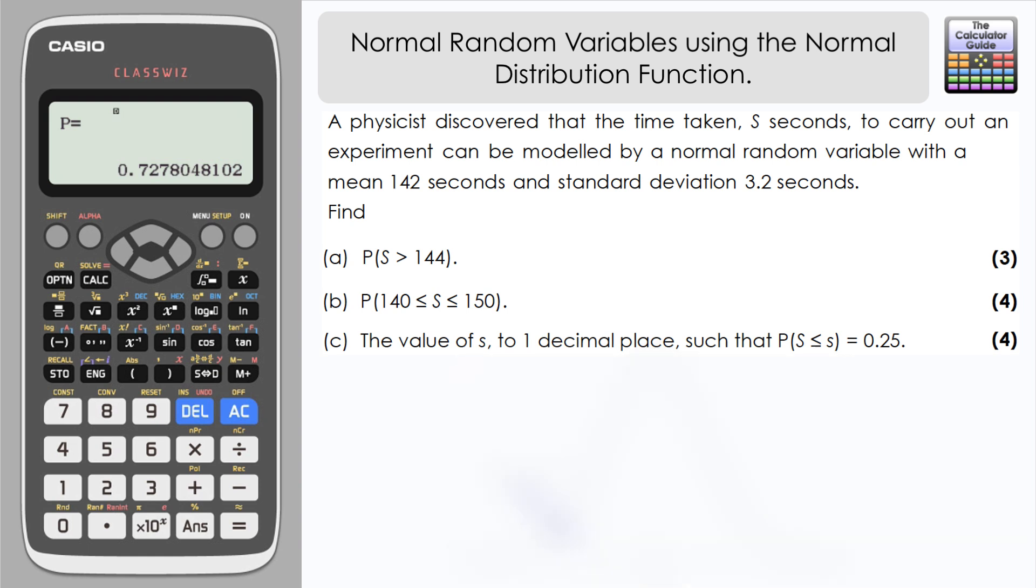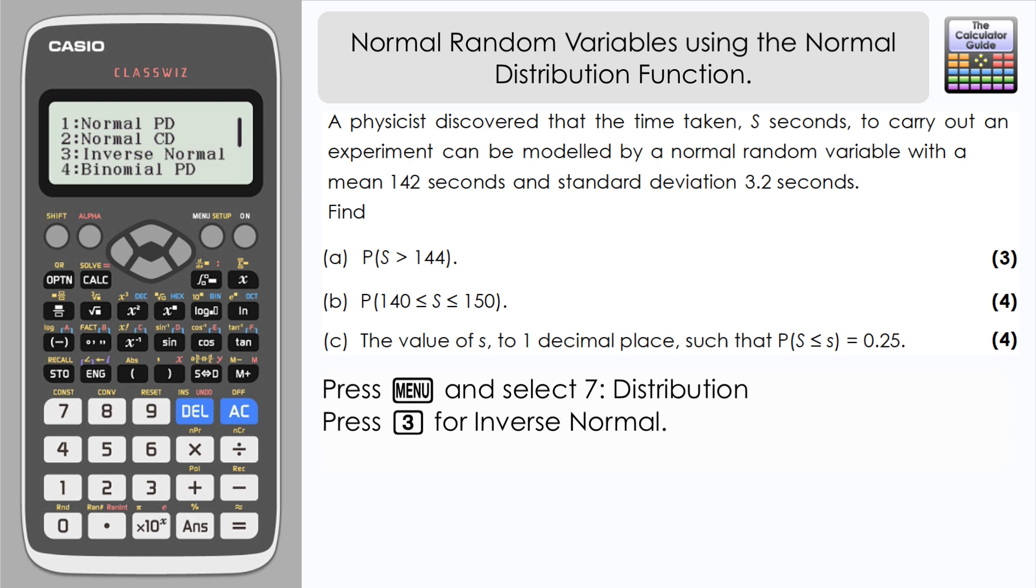In order to use the calculator to help us with this, we need to change to a slightly different function. Press menu and go into distribution mode again. This time we want inverse normal. This is because we already have a probability of 0.25 and we want to go back and find out a value, the number of seconds that would produce that. So we're going to press 3.